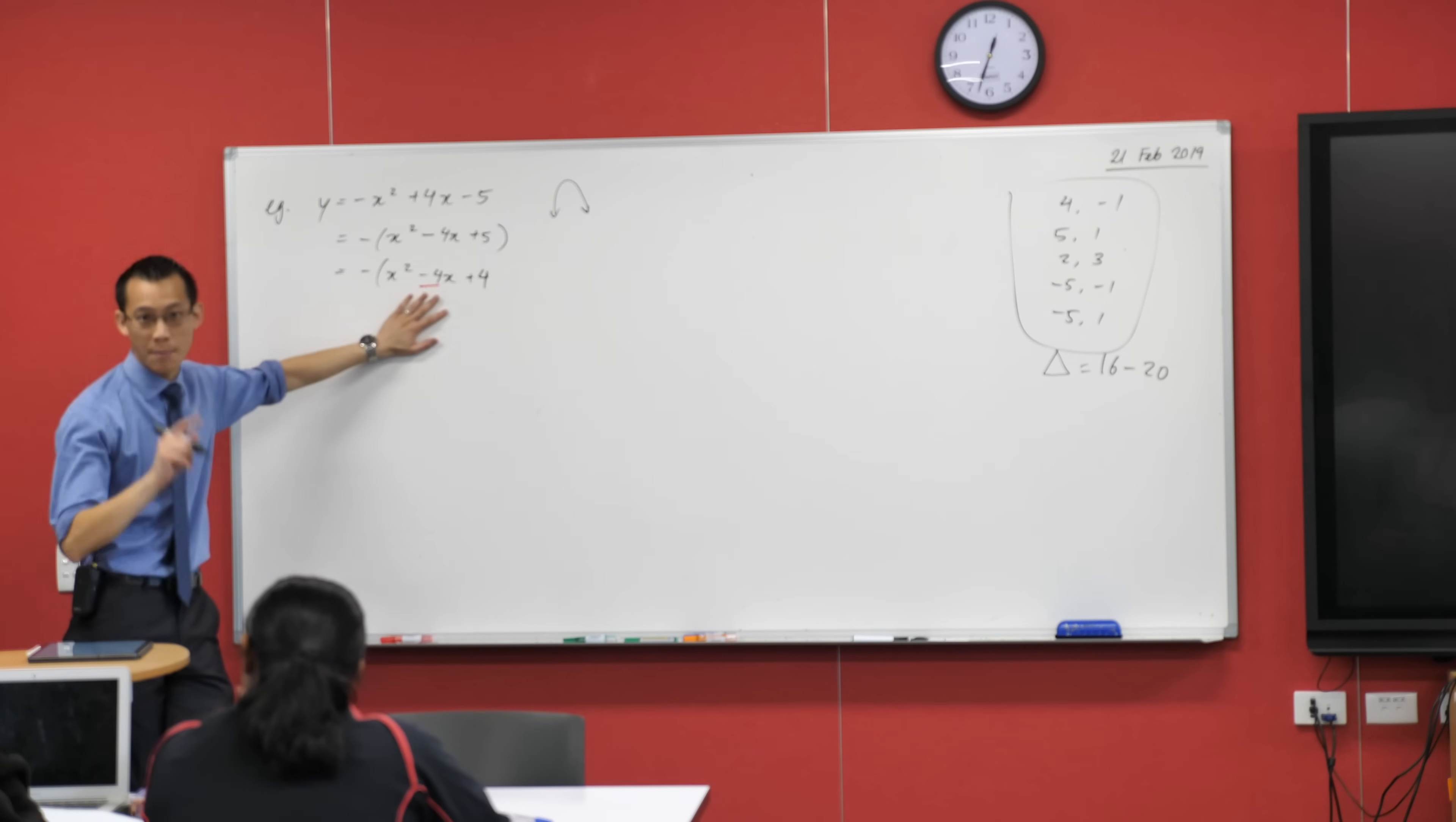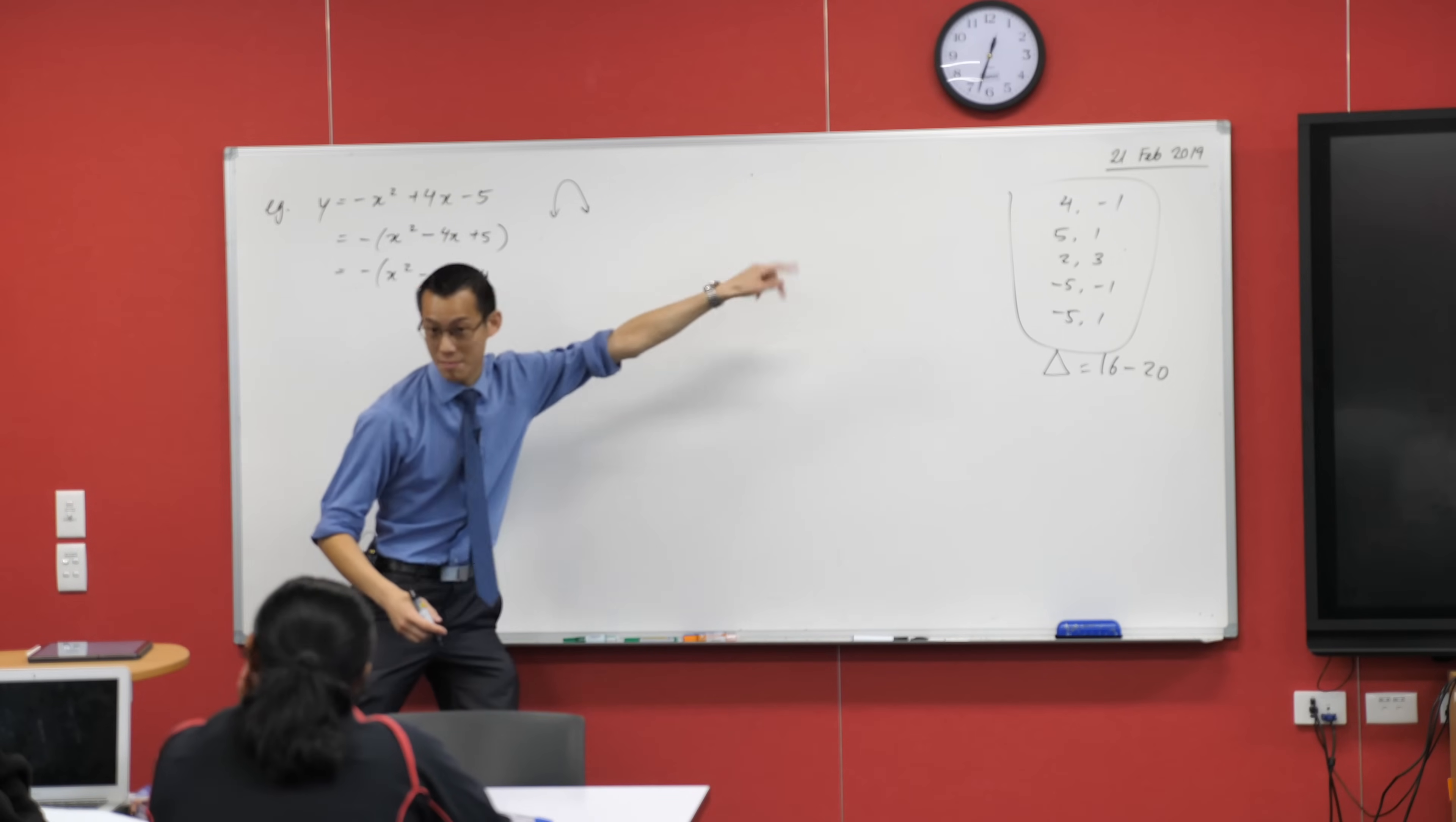Now see what I've just written now, number one it's incomplete, I've still got more stuff to write, but number two what I've written there is a square. So that's useful to me, right? I can factorize it nice and neatly. I can't factorize that but this I can.